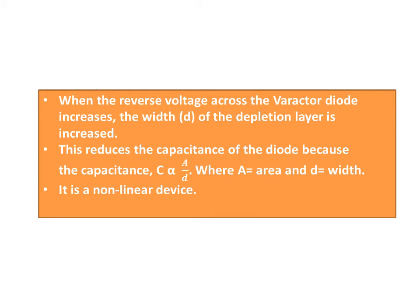When the reverse voltage across the Varactor Diode increases, the width D of the depletion layer increases. This reduces the capacitance of the diode, because the capacitance C is directly proportional to area A and inversely proportional to width D, where A equals area and D equals width.